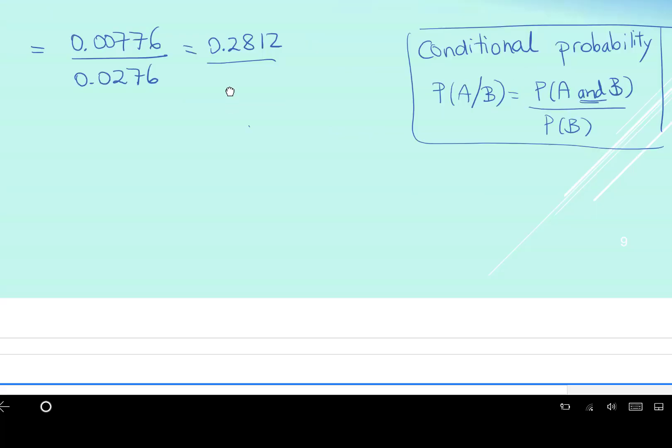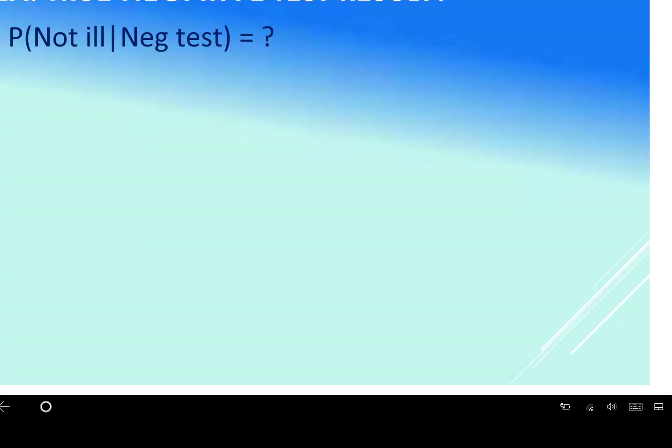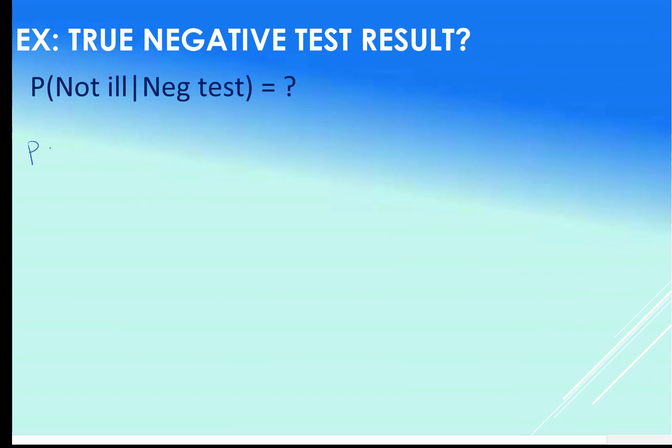Okay, do the same thing for the other one. So a not ill and negative test, well, that's going to be not ill. Sorry, not ill given negative test. So we're going to do not ill and negative divided by negative. Okay, again, think of that as a division. Always put the 'and' on the top. What are the odds of not ill as well? So we already have negative test result. What are the odds of them also not being ill?